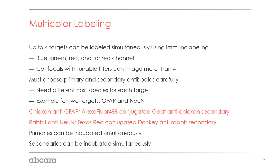For multicolor labeling, we can typically go after up to four targets at the same time, depending upon your imaging system and the filters that you have. You have to choose your labels wisely so you don't have bleed-over between the different channels, but generally speaking you can get up to about four channels, maybe five channels, depending upon the type of microscope and filters you have.